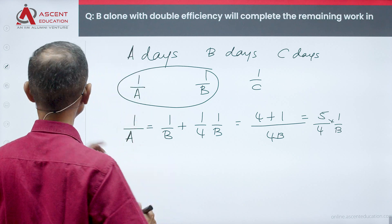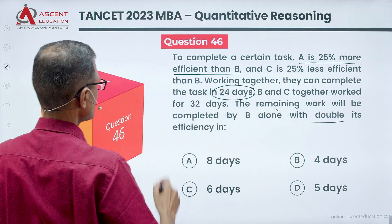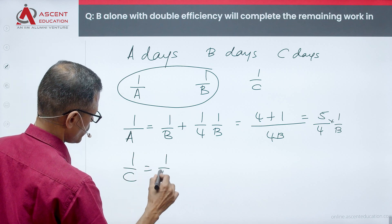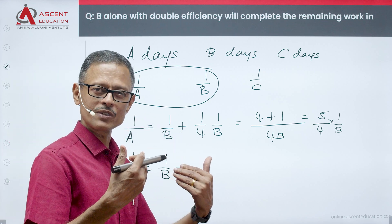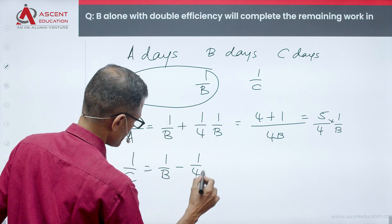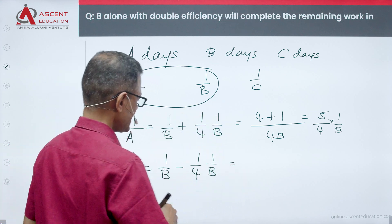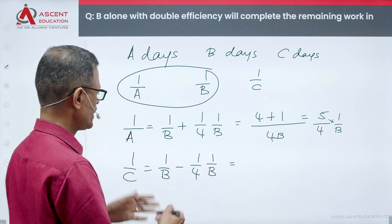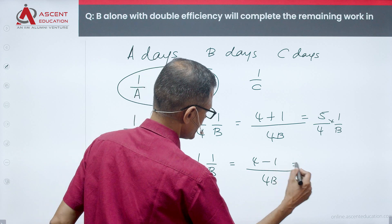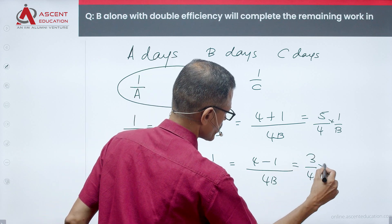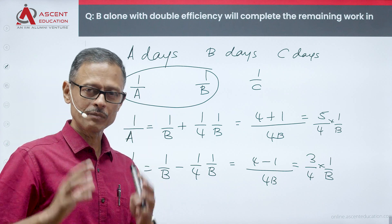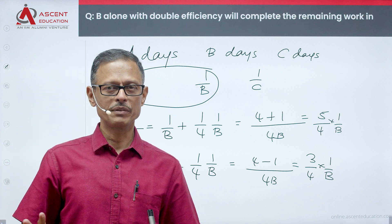Now, the relationship between B and C: C is 25% less efficient than B. So 1/C = 1/B − (1/4)·(1/B) = (4−1)/4B = (3/4)·(1/B). Therefore, 1/C = (3/4)·(1/B).